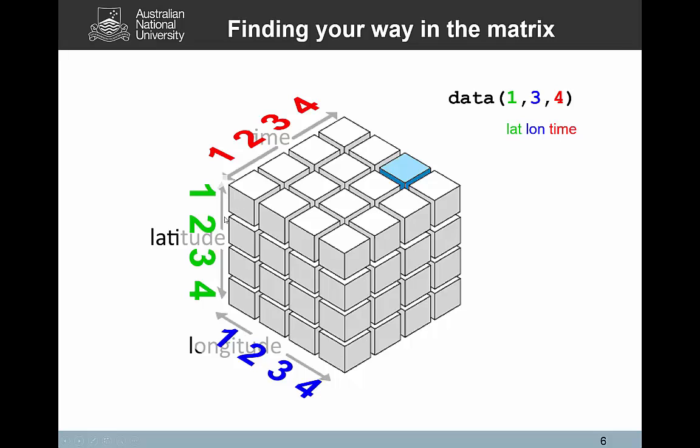The way MATLAB thinks of that then is the first cell here is latitude one, and if we look for longitude three, that means we're going to be looking at this row, so we're going to intersect this row with this row, and then the third element is four. Along the time domain, we're going to look for this cell here, essentially.